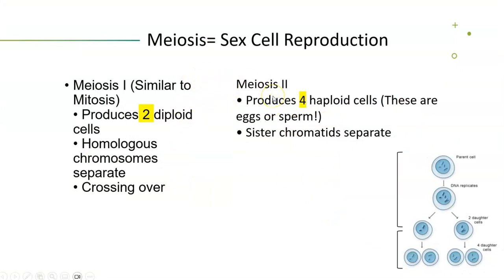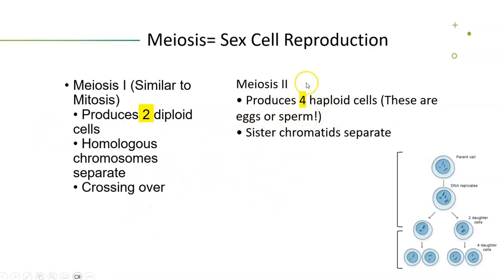Meiosis is going to be your sex cell reproduction. Meiosis I is similar to mitosis — this is where it splits into the first two daughter cells, and that's going to create diploid cells, meaning they have a full genetic set of information, similar to any other cell in your body after meiosis I, barring some genetic differences like crossing over. Meiosis II is going to create your four haploid cells — those are your daughter cells, your sperm and eggs. Definitely review this process, and if you have any questions, come visit us on the second floor of the library at ACES.